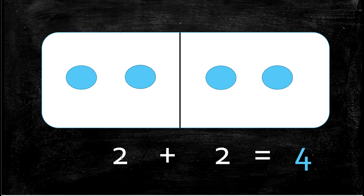The next double is 2 plus 2. So if you have 2 and your friend has 2, it equals 4. 2 plus 2 equals 4. Doubles can be split up evenly — that's why 4 is an even number.